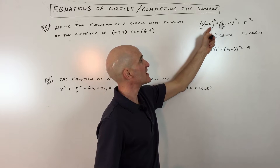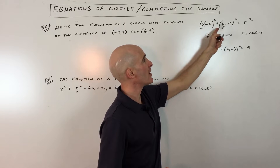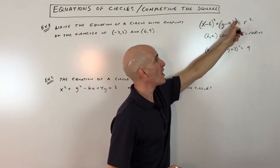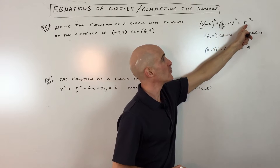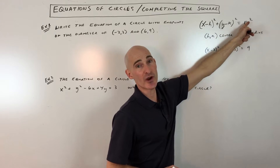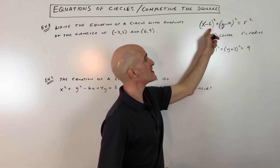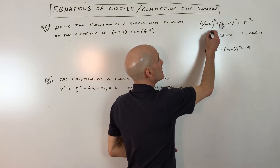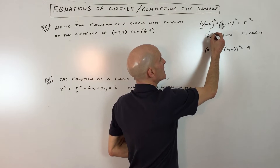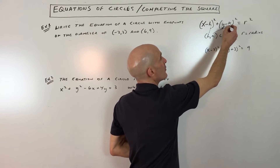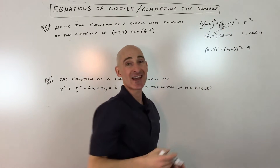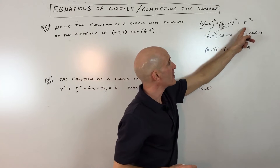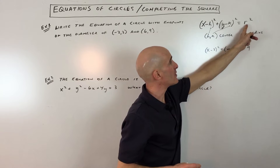The equation of a circle is: (x minus h) squared plus (y minus k) squared equals the radius squared. Memorize that, and remember that h and k are the center of the circle, the center point, and r is the radius.